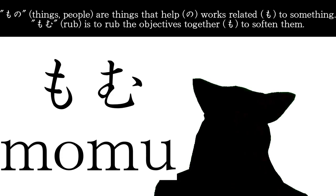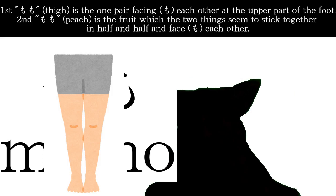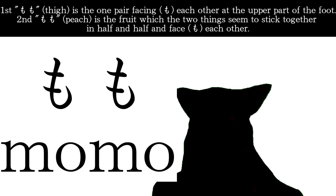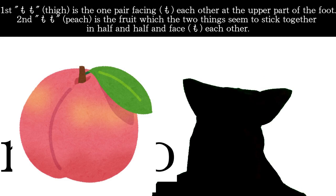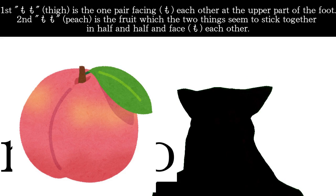The first meaning of momo, which is thigh, is one pair facing each other at the upper part of the foot. The second meaning of momo, which is peach, is a fruit which the two things seem to stick together in half and half and face each other.